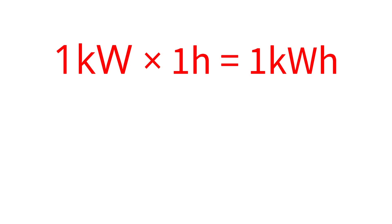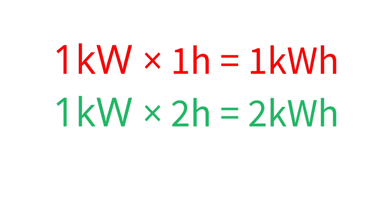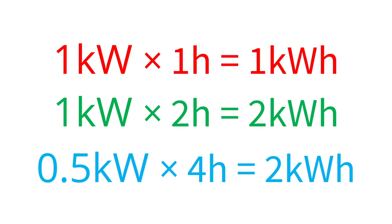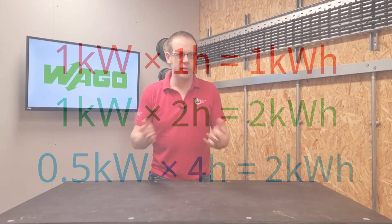So if you turn on a one kilowatt load for an hour, that gives you one kilowatt hour of energy, and you'll be billed accordingly for that usage. If you use one kilowatt for two hours, then you've got two kilowatt hours. You just multiply the power used by the time it's used for. So if you use half a kilowatt for four hours, multiplying 0.5 by 4 gives you two kilowatt hours — less power, but used for longer.